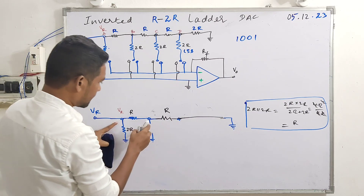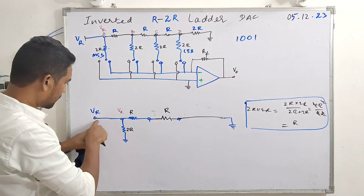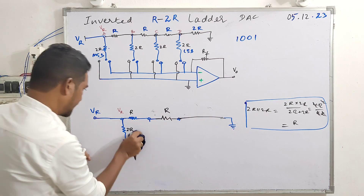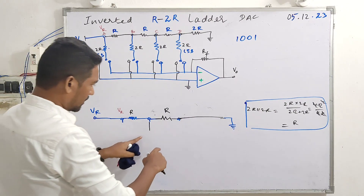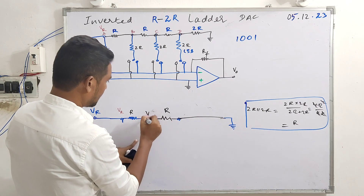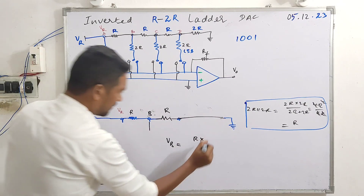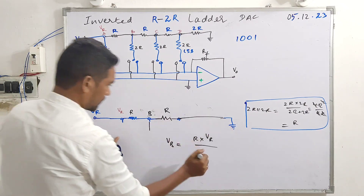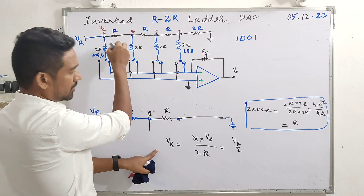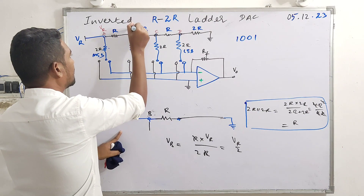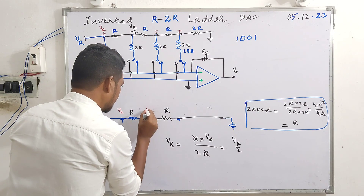We are trying to validate what the drop across VB will be. According to the potential divider rule, we want the voltage drop across this point with respect to ground. The required voltage is across resistor R, so VB equals R into VR upon the total resistance from end to end. That gives us VB = VR by 2 at that node.